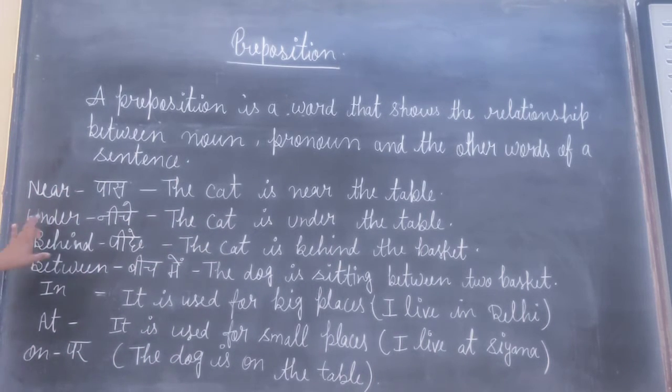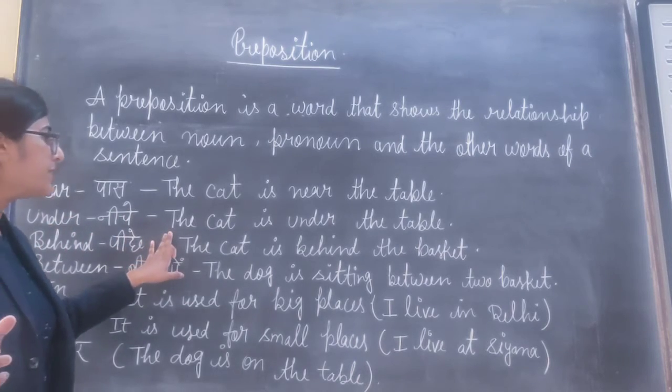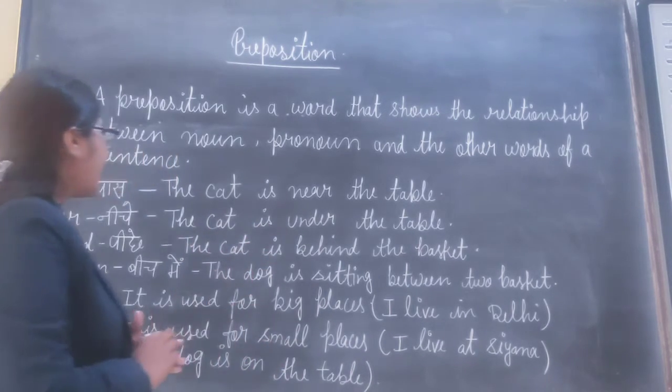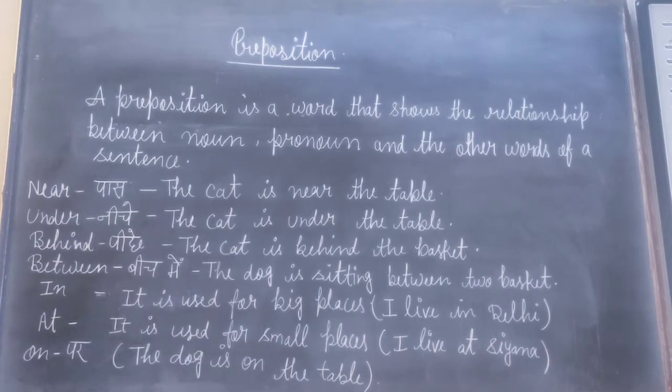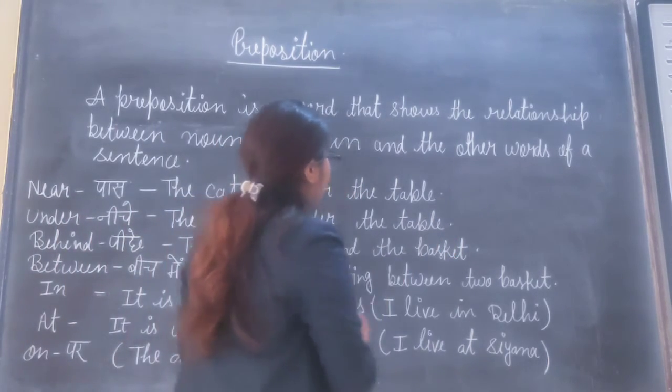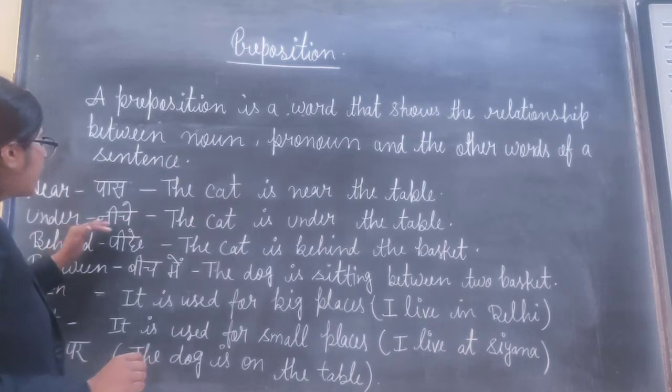Under. The cat is under the table. For example, a cat is under the table. So, under is a preposition.